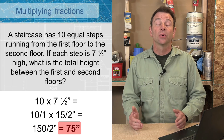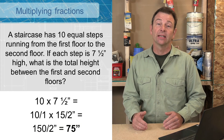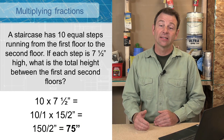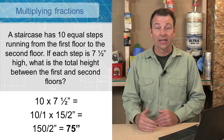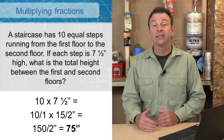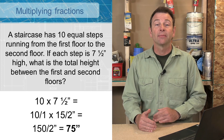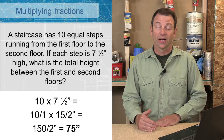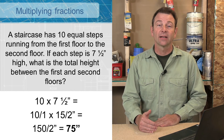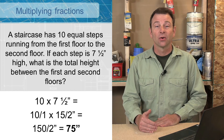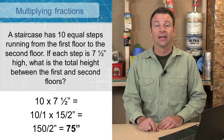To solve, we divide 150 by 2, which gives us 75 inches. So if we have 10 stairs that are seven and a half inches tall, they're going to add up from the ground floor to the second floor a total of 75 inches in height.